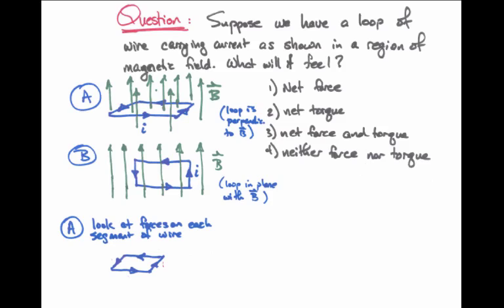In case A, let's again look at each segment of the wire. The segment of the wire toward the back feels a force that points away from us and into the page. That's because L points to the left, B points straight up, and by the right hand rule, if we curl our fingers from the left pointing straight up now, our thumb points back into the page.